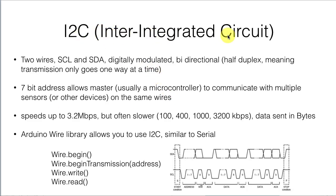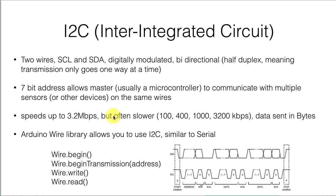I2C, the inter-integrated circuit protocol, was devised to allow multiple integrated circuits, usually on the same circuit board, to talk to each other. It has only two wires — SCL and SDA — digitally modulated and bidirectional, but data can only go in one direction at a time: half-duplex. There are 7-bit addresses that allow the master microcontroller to communicate with multiple sensors on the same wires, meaning addresses are sent over those data lines instead of using a separate chip select pin. This results in fewer wires but slower speed — about a third the maximum speed of SPI. Despite this, I2C is a very common protocol for connecting sensors to microcontrollers.